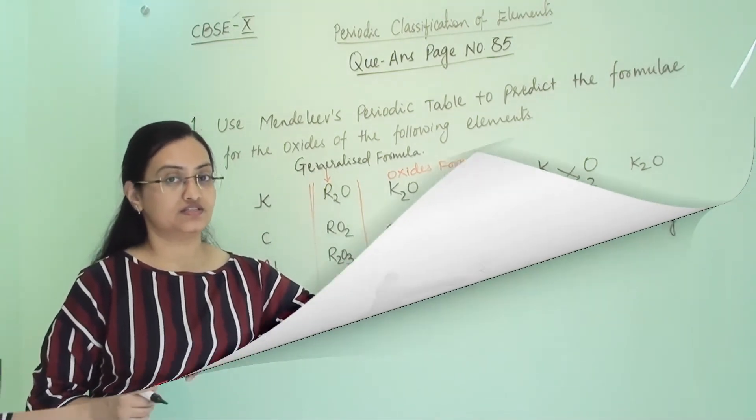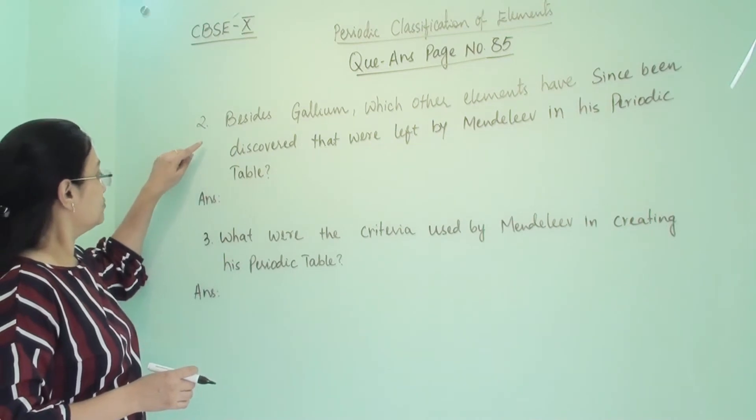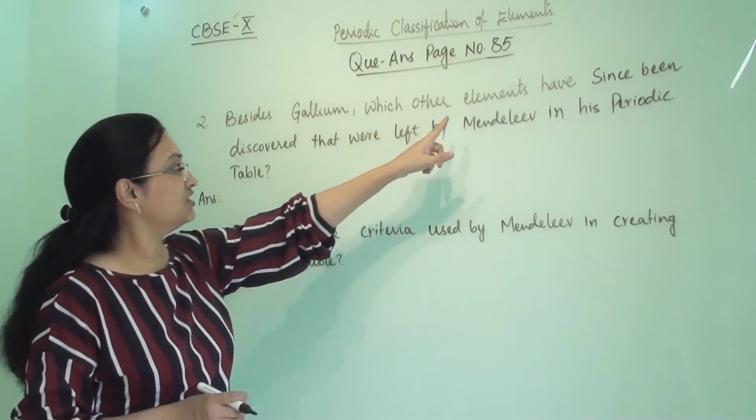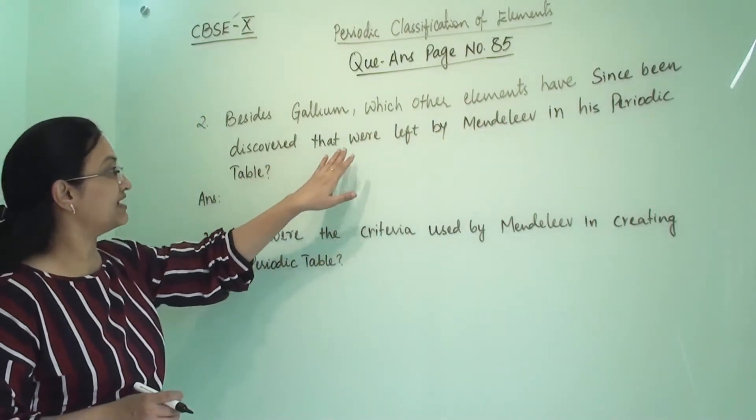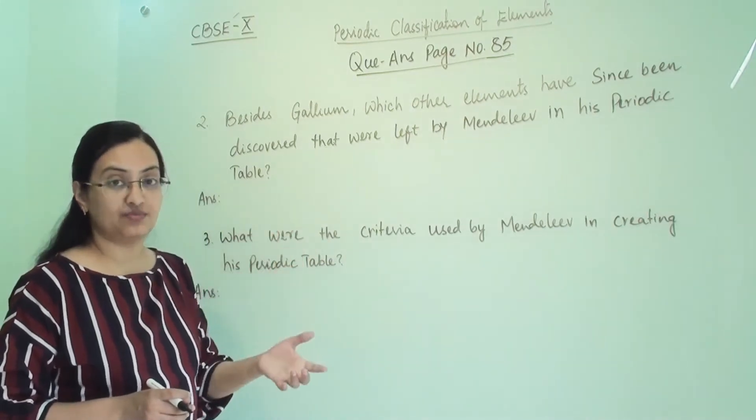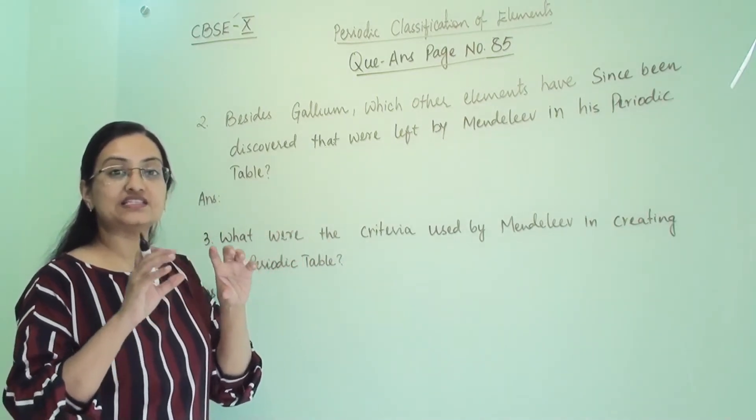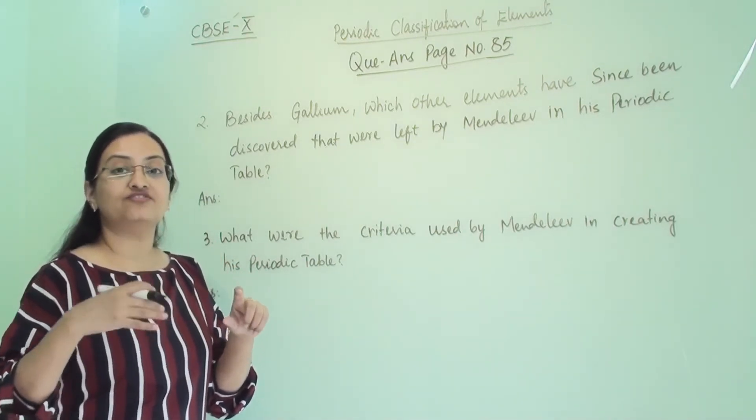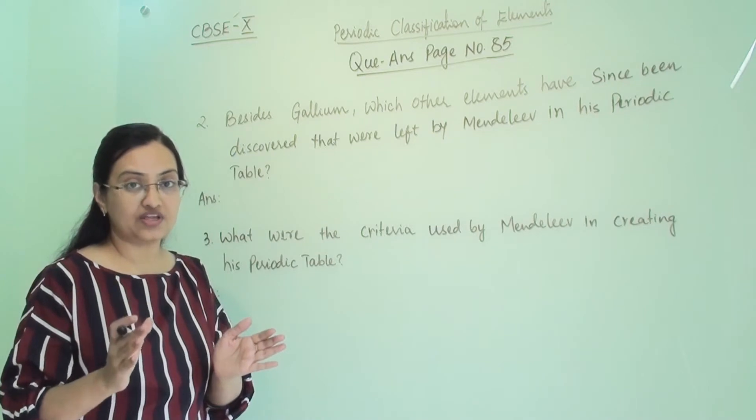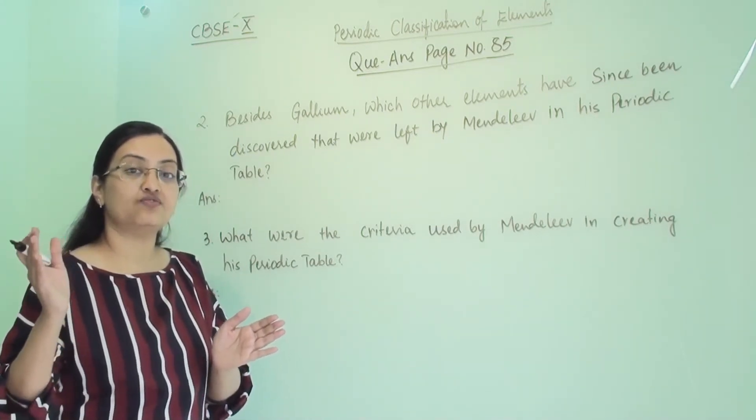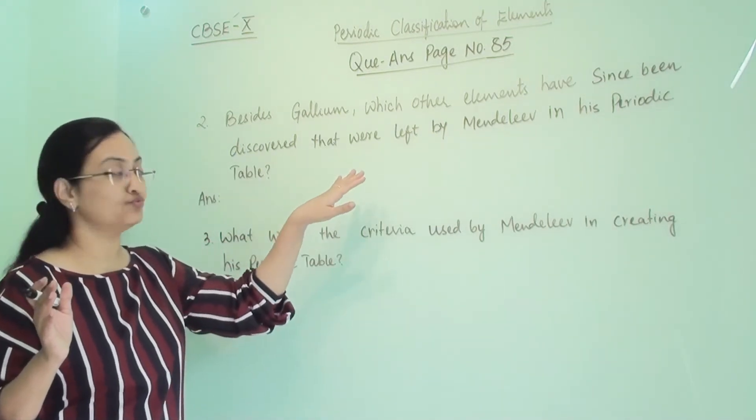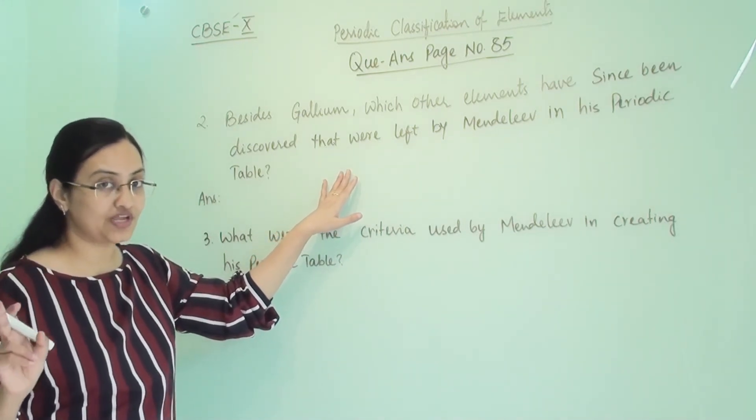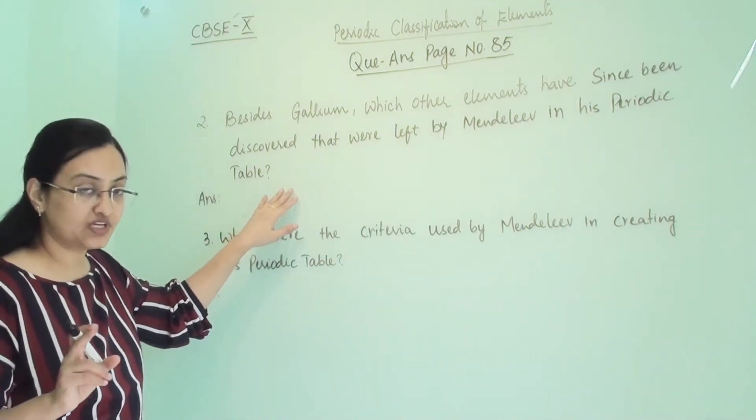Our next question is 2: Besides gallium, which other elements have since been discovered that were left by Mendeleev in his periodic table? That means he placed some vacant places in his periodic table. After he gave the periodic table, scientists found out those elements with the help of those places which Mendeleev put vacant in his periodic table. So those elements we need to write here.